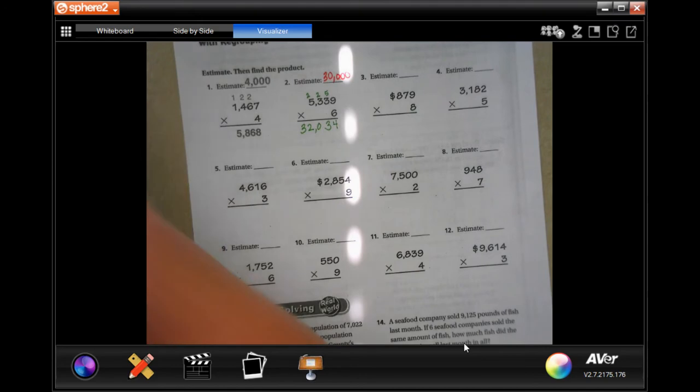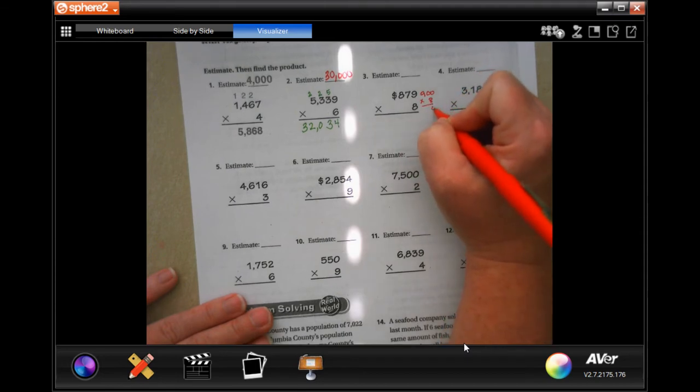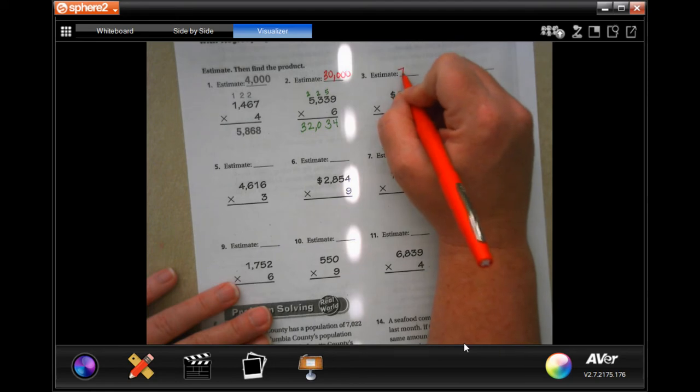Same thing on the next one. 879 is going to round to about 900. You're going to keep your 8, 8 times 0, and 0, and then 8 times 9 is 72. So your estimate, 7,200.